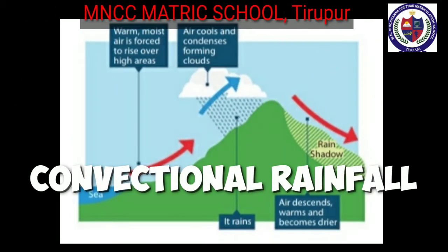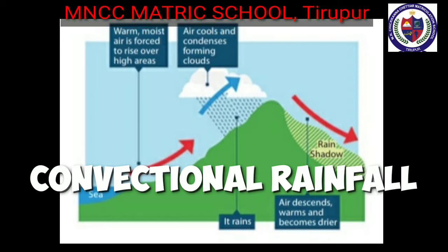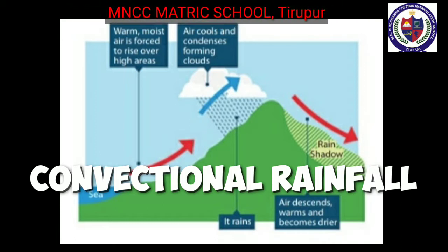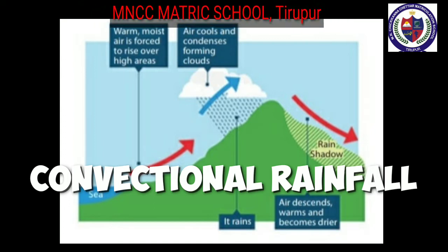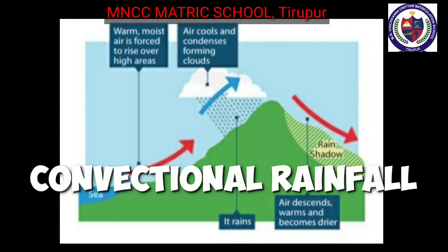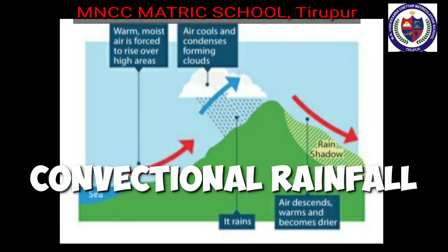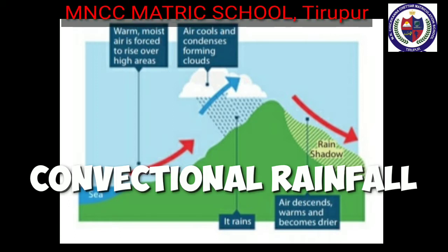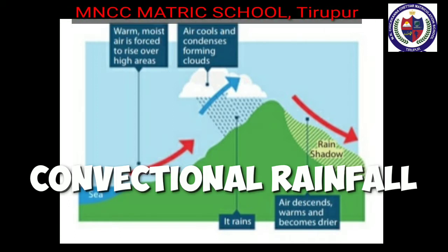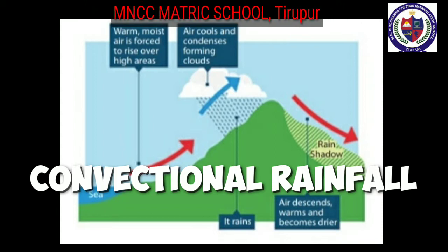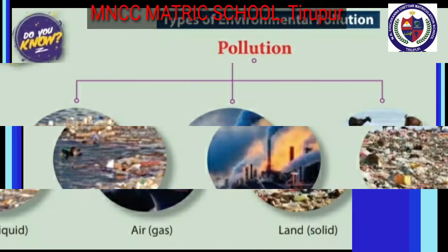Convectional rainfall: during summer, solar insolation takes place on land and water evaporates from lakes, ponds, and vegetation. Due to this, heavy rainfall with lightning and thunder occurs in the evening for a short period.